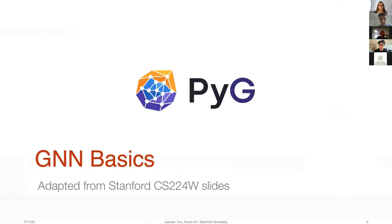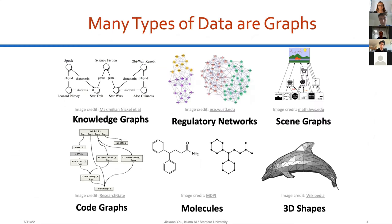Now I'm getting started with introducing some basics about graph neural networks. Part of these slides are adapted from the Stanford CS224W slides, where I was also a head TA helping create the course materials. As we know, many types of data are naturally represented as graphs — examples include knowledge graphs, bioregulatory networks, scene graphs as seen in images, code graphs, molecules where atoms and bonds are nodes and edges, and 3D shapes represented as mesh-like graphs.